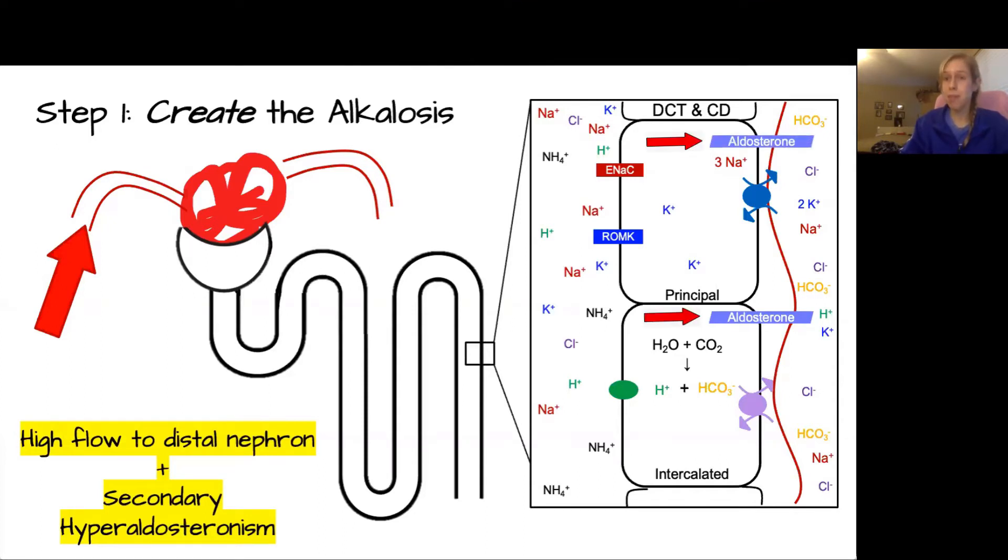But at the same time, because of the diuretics effects in the loop of Henle and the distal convoluted tubule, we're going to have a high flow to the distal nephron. This is because the diuretics are blocking the important reabsorption channels, that means that we're going to have sodium and the associated water, along with the other electrolytes that it pulls, that are all going to end up in the distal nephron instead of being reabsorbed where they otherwise would have been.